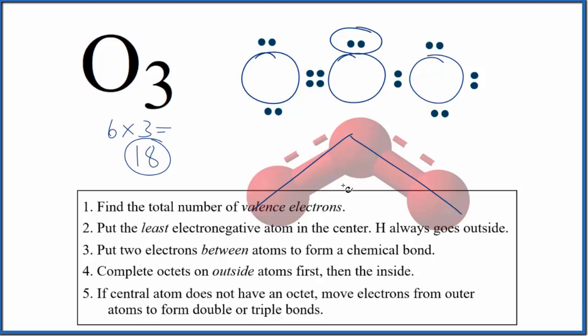For ozone, the bond angle is about 117 degrees, and the molecular geometry is bent. That's the Lewis structure for O3, ozone. This is Dr. B, and thanks for watching.